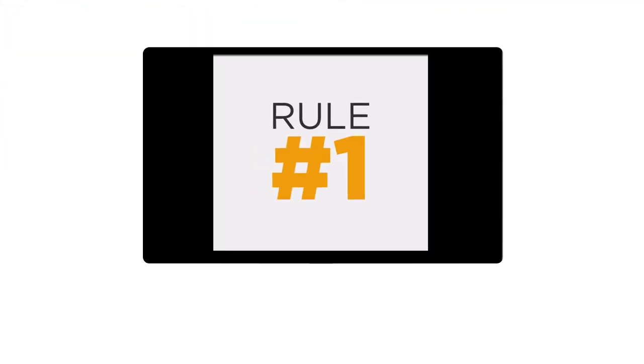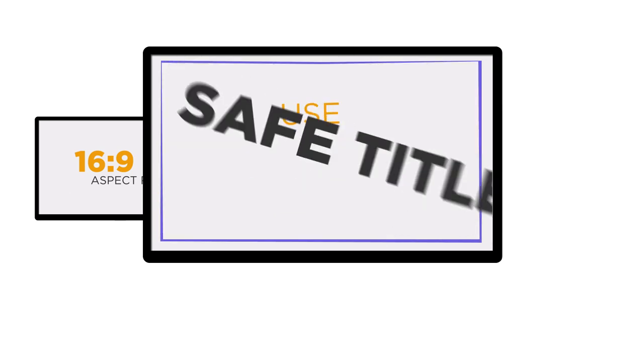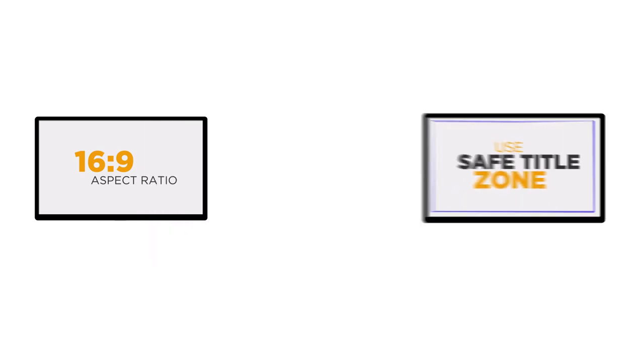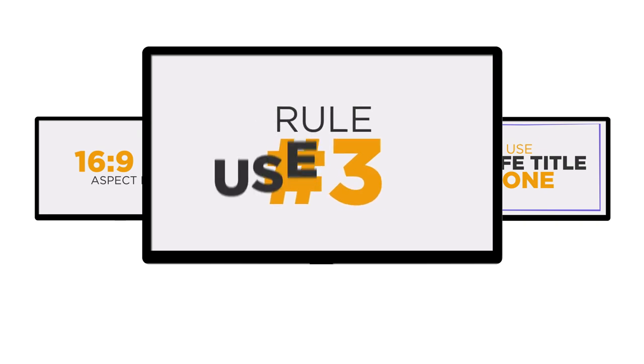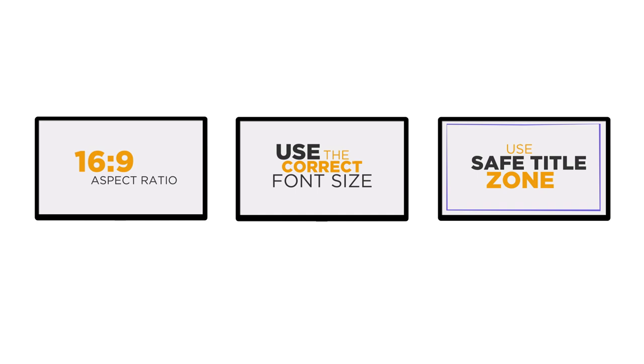Let's recap. Number one: make sure your slideshow is in a 16 by 9 aspect ratio. Number two: create all text within the safe title zone. Number three: check your font size. If you can follow these three rules, your presentation is sure to be a hit.